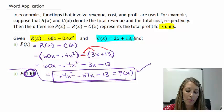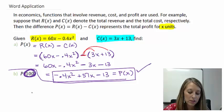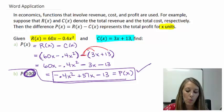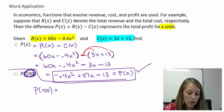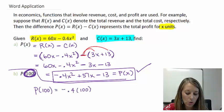Well, we just came up with our profit equation. So, what we need to do then is we need to substitute that 100 into that profit equation. So, P of 100 is equal to negative 0.4 times 100 squared plus 57 times 100 minus 13.